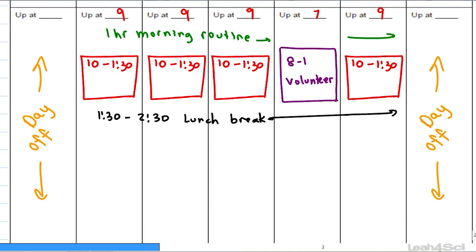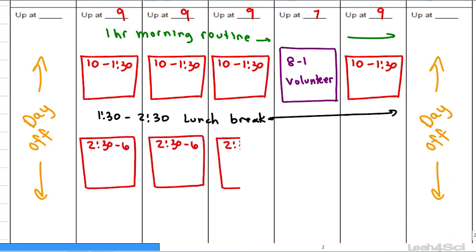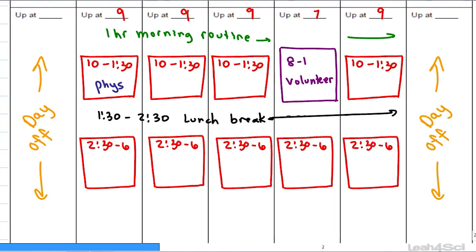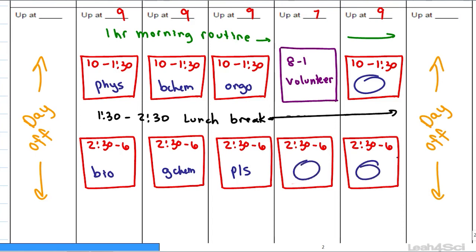Let's go with another three-and-a-half-hour block from 2:30 till 6pm. Now that we have all the study blocks, let's fill them in, aiming to see every subject at least once a week. I like to put the harder subjects in the morning so that you're fresh — you dig in and by lunchtime it's done. For most students the hardest subject is physics, so let's put it on Monday. Biochemistry and organic chemistry are two other toughies. We can follow physics with bio, biochemistry with gen chem, and orgo with psych-soc.